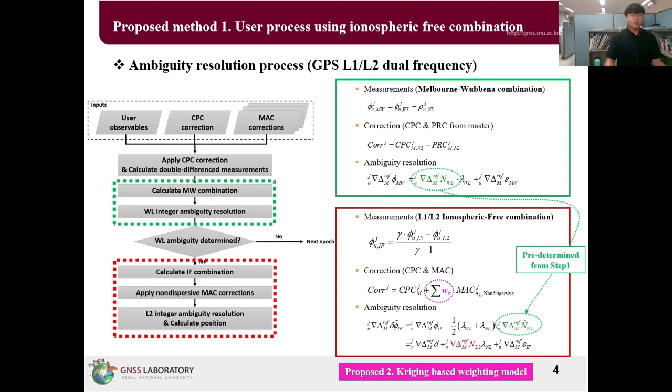In detail, the algorithm for using GPS L1/L2 dual frequency measurement involves using the Melbourne-Wübbena measurement to determine the wide-lane ambiguity, and the ionosphere-free combination measurement to determine the final single-frequency ambiguity. In the process of applying the non-dispersive Melbourne-Wübbena corrections, which includes the tropospheric delay errors, the kriging-based weighting model is used.